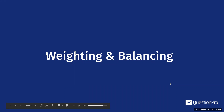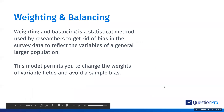Weighting and balancing is a newly revised module here at QuestionPro. To give a baseline: weighting and balancing is a statistical method used by researchers to get rid of bias in the survey data to reflect a general larger population. It permits you to change the weights of variable fields and avoid sample bias. For example, if you're a men's clothing company and 80% of your customers are male, but your survey results show a 50-50 gender split, you'd want to weight the data accordingly to ensure it reflects your target market.